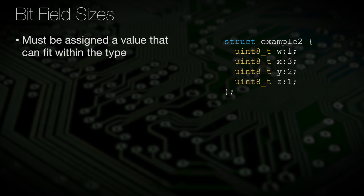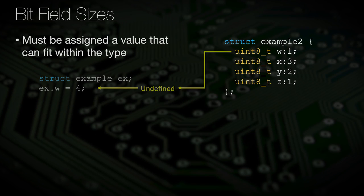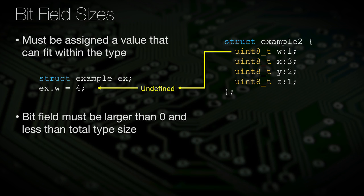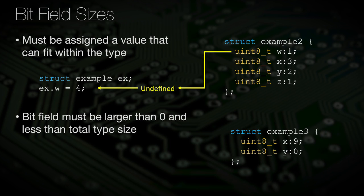Bitfields must be assigned a value that can fit within its bit width, otherwise the operation is undefined. For example, a bitfield of width 1 should never see an assignment larger than 1. The bitfield width must also be larger than 0 but smaller than the bit width of the underlying type you've declared it for. For example, if you declared a structure member x with a uint8 type but a bitfield size of 9, you would get a compiler error.